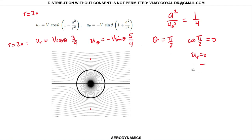Sine of pi over 2 is equal to 1. And that gives you U_theta is equal to minus 5/4 V.